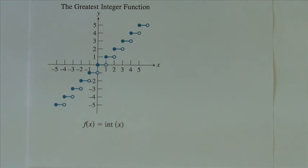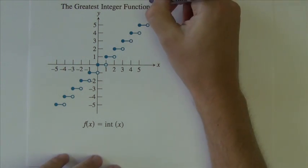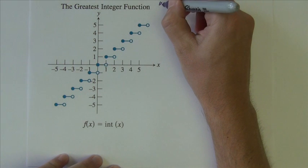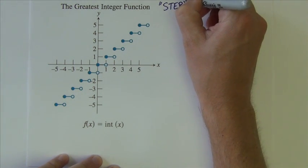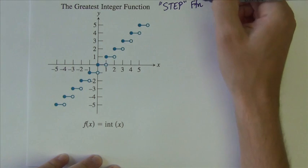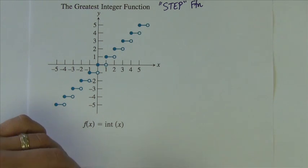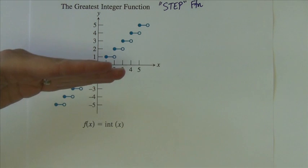The next function is no doubt a very peculiar looking function. It's very easily recognizable by its appearance. It's called the greatest integer function. It is sometimes called a step function. For obvious reasons, it looks like a staircase, like a bunch of steps.